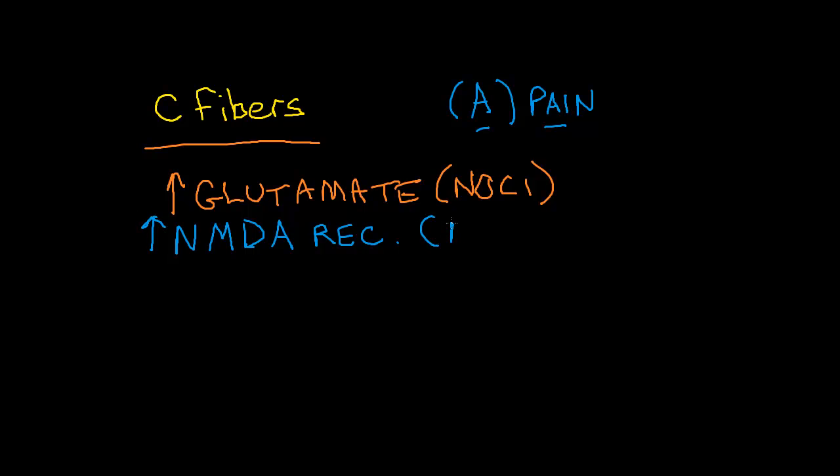Literature also says that we get more substance P production. Substance P has a lot of different functions, but one of the key functions that it has is that it decreases the threshold of nociceptive processing in the periphery.